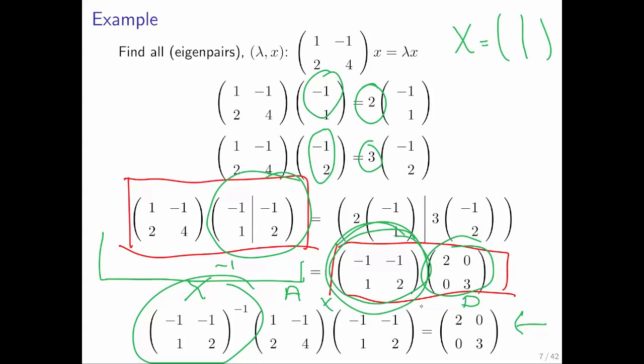And lo and behold, if we then did X inverse A times X, we got a diagonal matrix that had the eigenvalues on the diagonal. So, this shows that there seems to be a relationship between diagonalizing a matrix and finding the eigenvectors and eigenvalues of that matrix.